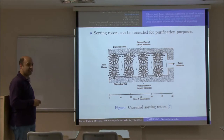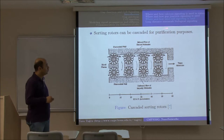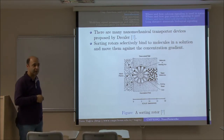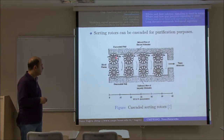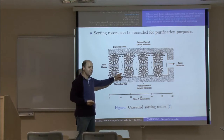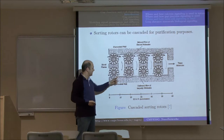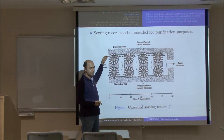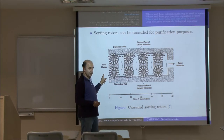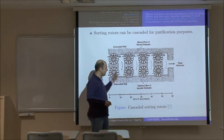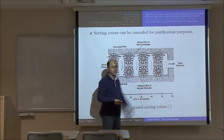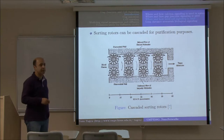You can have a cascade of these rotors for purification. In the previous figure, some error molecules may be carried to the wrong side. To get rid of them, you put a second rotor that takes not the black molecules but the white molecules and takes them out. If some white molecules by mistake pass through the first rotor, they will diffuse and hopefully be caught by this second one. Depending on the purification level you want, you can have more or fewer cascades, until almost no white molecules remain on that side.